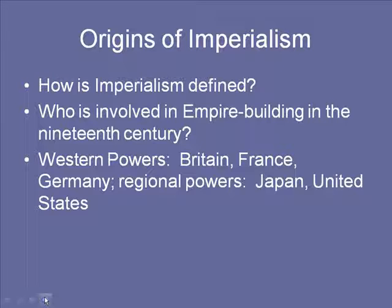Japan and the United States remained regional powers. The United States primarily had influence over the Caribbean and Central America — places in the Caribbean like Puerto Rico and Cuba, and later the Dominican Republic and Haiti. In Central America, places like Nicaragua where we actually had troops stationed for a long time, and also in Haiti in the 1920s and 1930s. The United States' sphere of influence has always been really limited to the Caribbean and Central America.